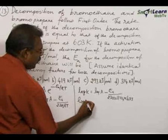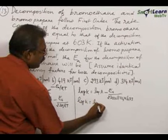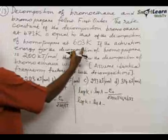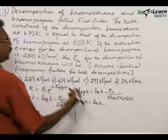Now for the other decomposition, log k equals log A minus, see Ea is given here, that is the Ea 200 kilojoule per mole.